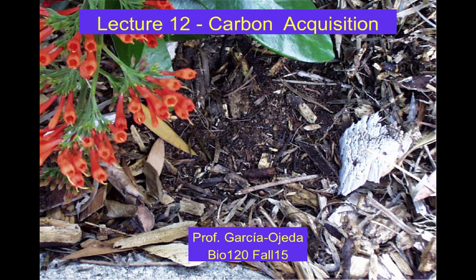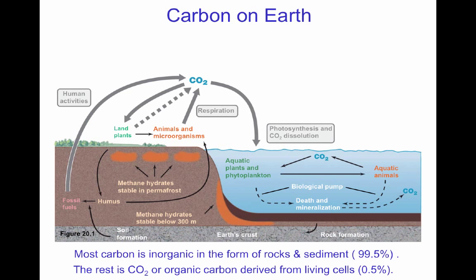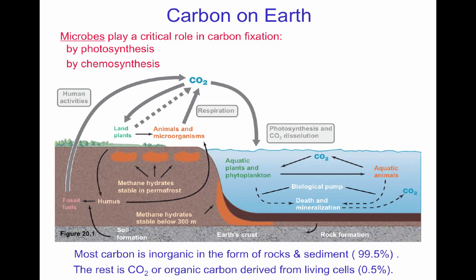Welcome to the 12th lecture in Bio 120. We're going to be looking at the carbon cycle and how microbial cells acquire carbon. Microbial cells play a very important role in carbon fixation, bringing carbon in by either photosynthesis or chemosynthesis. Microbes are also very important in recycling organic carbon by decomposition, decomposing carbon from organic matter and releasing it as CO2, then bringing that CO2 back into the biological system.